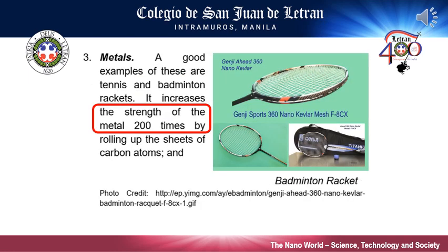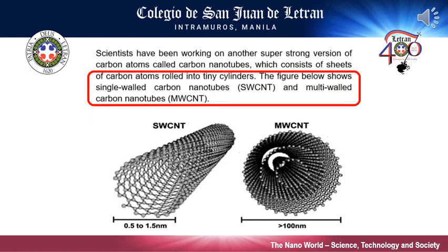Third, metals. Baseball bats, tennis and badminton rackets, racing bicycles, etc. are some of the sporting equipment whose performance and durability are being improved with the help of nanotechnology. It increases the strength of the metal 200 times by rolling up the sheets of carbon atoms. Carbon nanotubes are cylindrical molecules that consist of rolled-up sheets of single-layer carbon atoms. They can be single-walled carbon nanotubes with a diameter of 0.5 to 1.5 nanometers, or multi-walled consisting of several concentrically interlinked nanotubes with diameter reaching more than 100 nanometers. Their length can reach several micrometers or even millimeters.